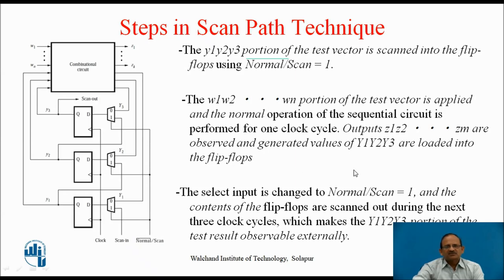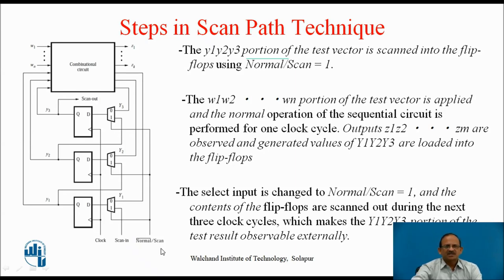The select input is now changed — Normal/Scan equal to 1 — and the contents of the flip-flops are scanned out during the next 3 clock cycles, which makes the Y1, Y2, Y3 portion of the output observable externally. So this is how, although the present state variables and the next state variables are not externally available, it is possible to apply them and observe the next state variable output by using this shift register. This is how the sequential circuit can be tested.